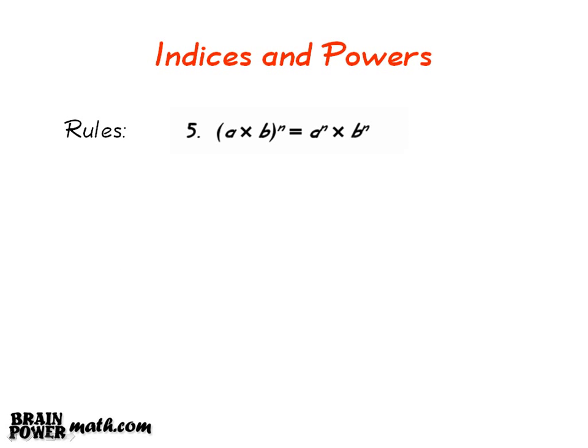Rule 5 states that a multiplied by b, all to the power of n, is equal to a to the power of n multiplied by b to the power of n. Rule 6 states that a divided by b, all to the power of n, is equal to a to the power of n divided by b to the power of n.